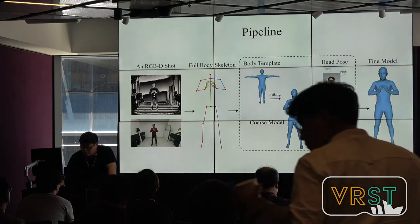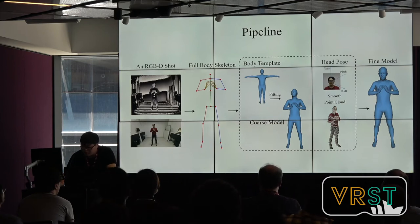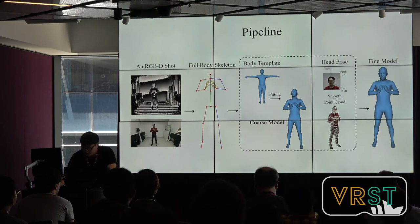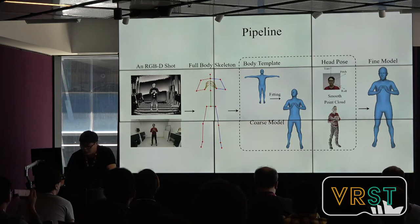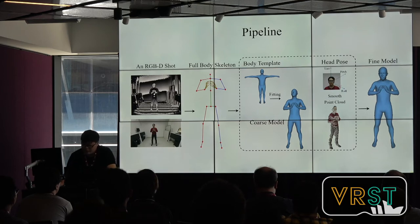Now I begin to introduce our work, which we call Single RGBD Fitting. Here is the pipeline of our method. For an RGBD shot, we first estimate the full body skeleton by a composed skeleton estimation method. Then we fit a body template, SMPL-plus-edge, with a coarse-to-fine strategy. In the coarse step, a coarse model is obtained by fitting the skeleton with the standard body template SMPL-plus-edge. In the fine step, we take head pose and the dense point cloud as constraints to refine the coarse model, so that a fine result with hand orientation and hand details is obtained.